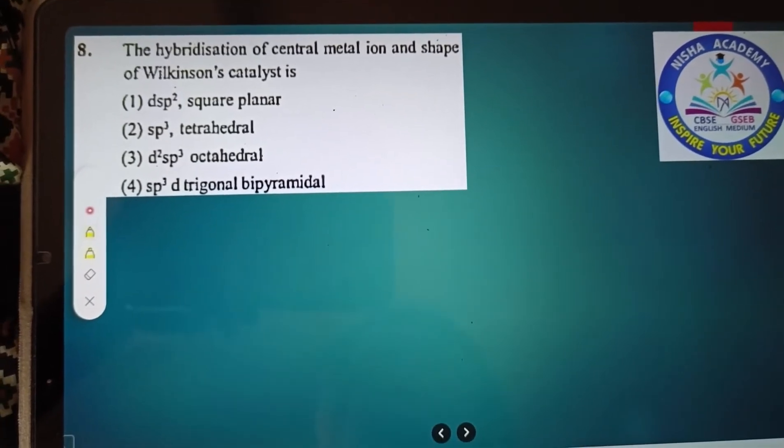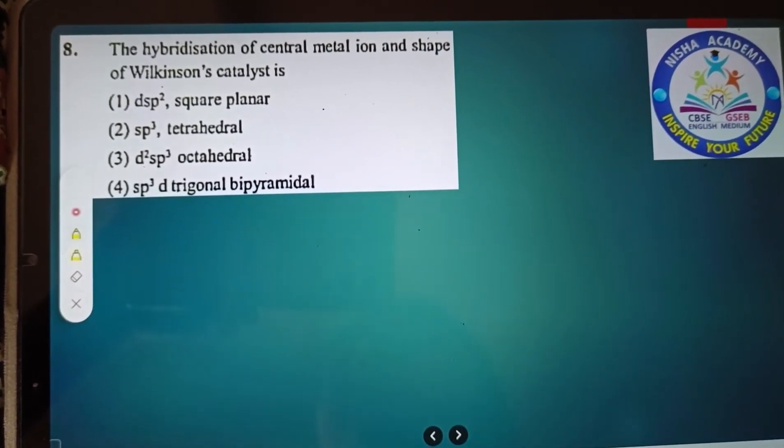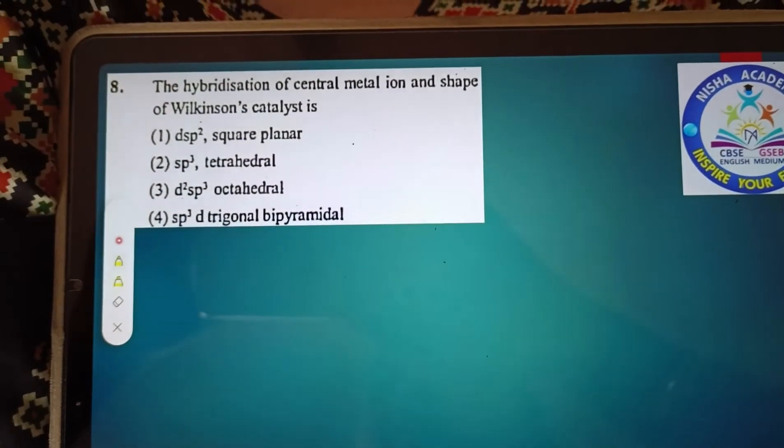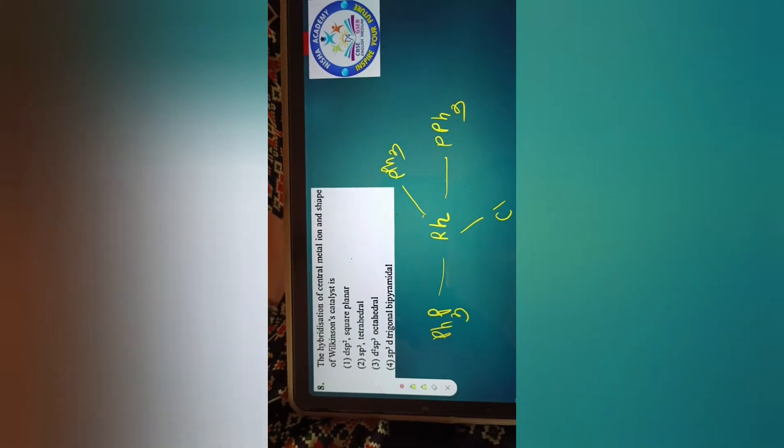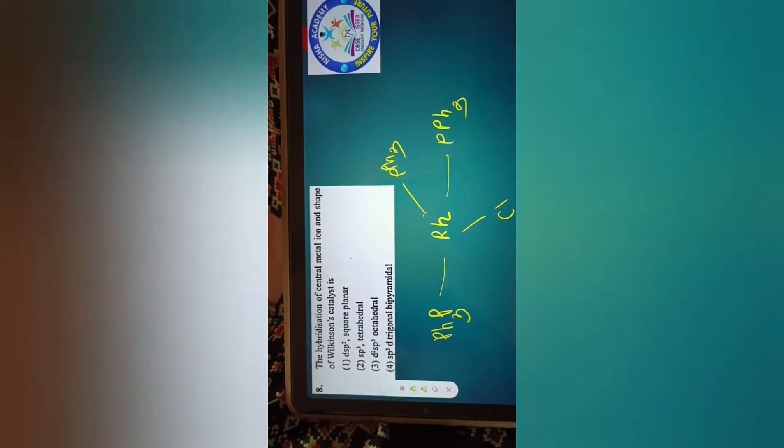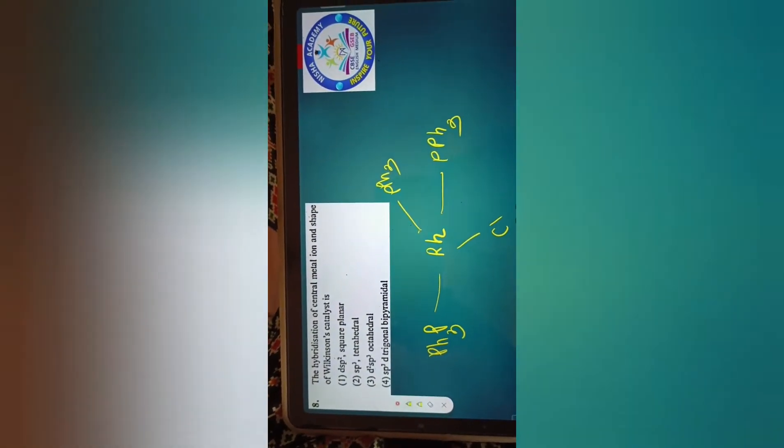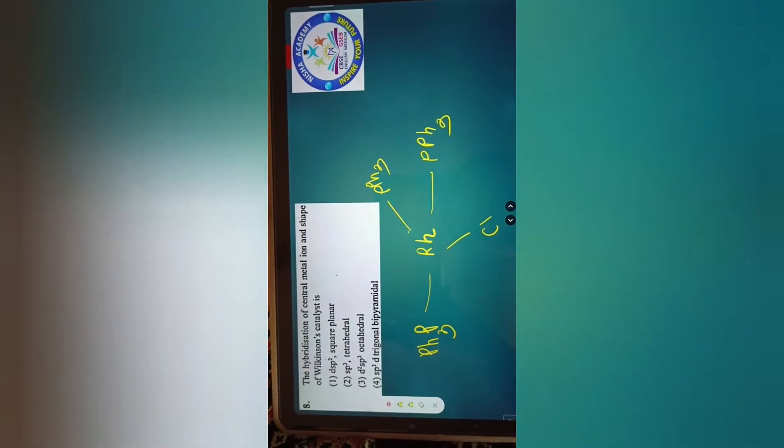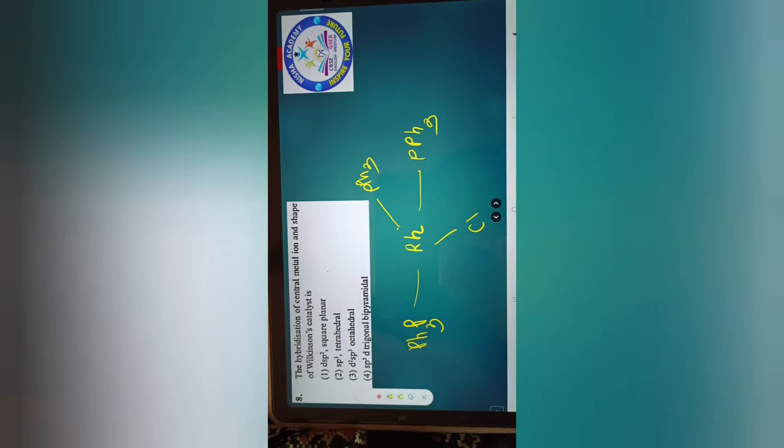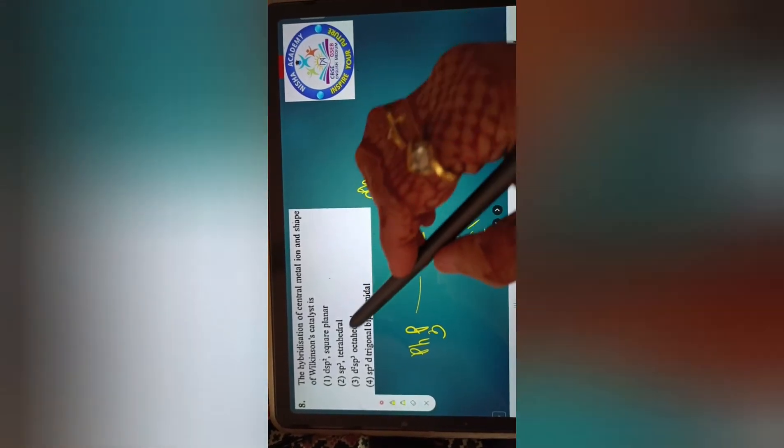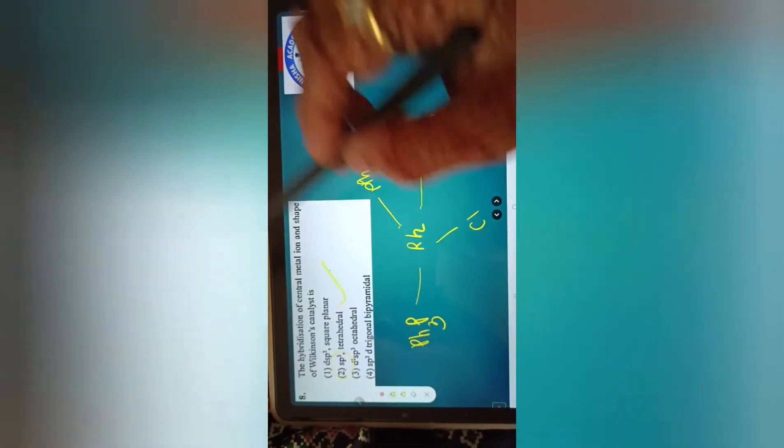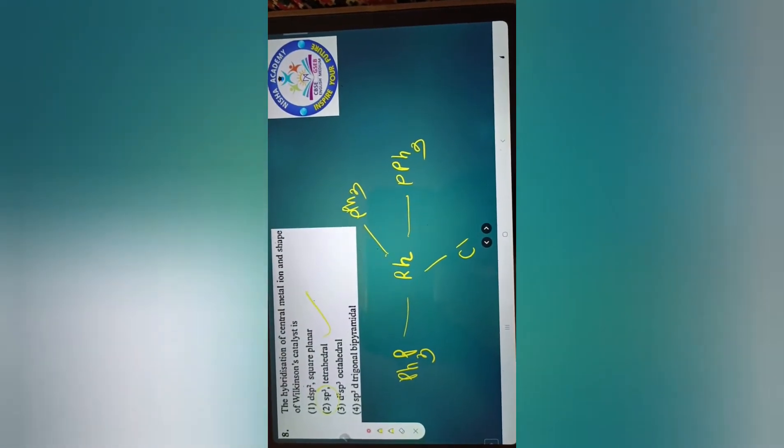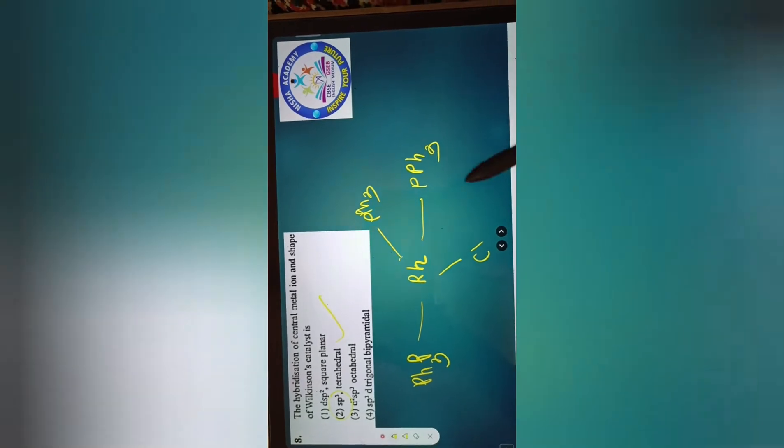Hybridization of central metal iron in Wilkinson's catalyst - this is from the uses part. How do you decide? The answer is option 4, tetrahedral. Or is it octahedral or square planar? Tetrahedral. This requires VBT, valence bond theory.